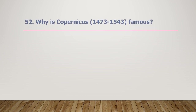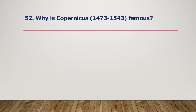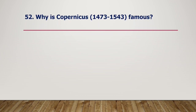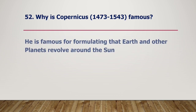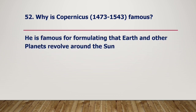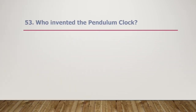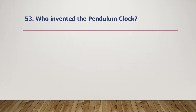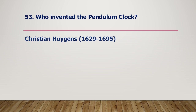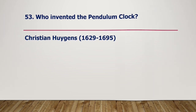Why is Copernicus, 1473–1543, famous? He is famous for formulating that the Earth and other planets revolve around the Sun. Who invented the pendulum clock? Christiaan Huygens, 1629–1695.